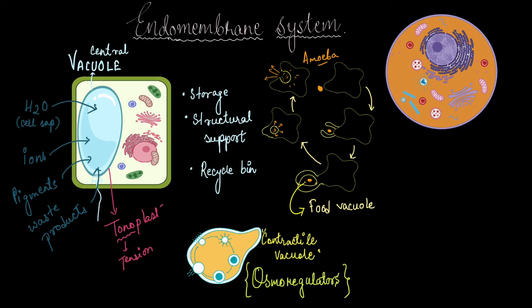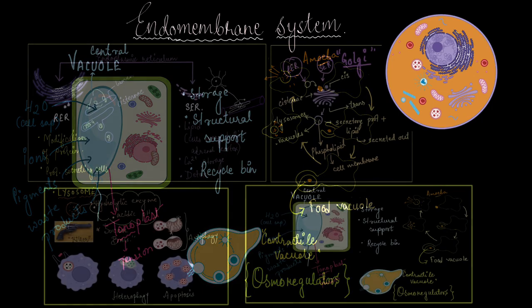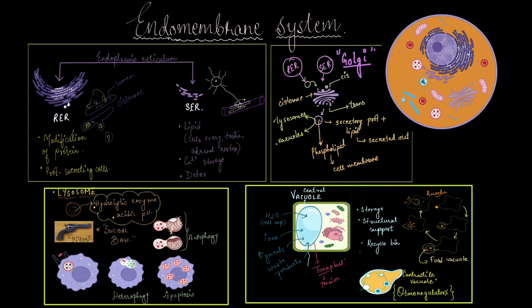So with this we have come to the end of the endomembrane system. So these are the four organelles that we discussed under the endomembrane system. They work in a coordinated fashion in order to help the cell perform and survive. These are the endoplasmic reticulum, the Golgi body, lysosomes, and vacuoles.